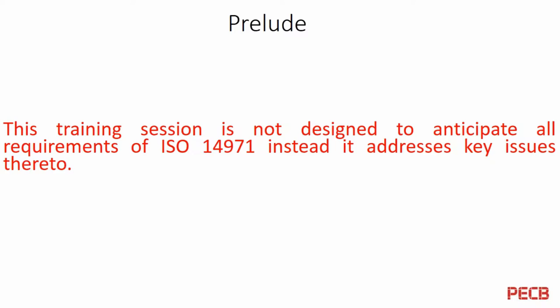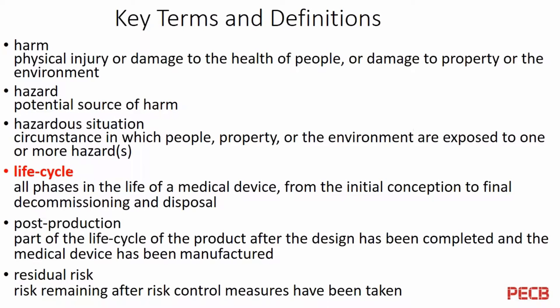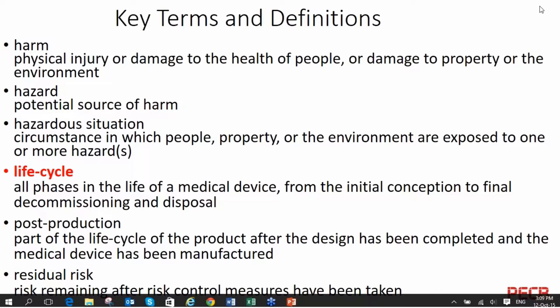Let's start. Before we go through the presentation, let's agree on some helpful terms as defined in the ISO 14971 standard. Harm is physical injury or damage to the health of people, or damage to property or the environment. Hazard is a potential source of harm. Hazard situation is circumstances in which people, property, or environment are exposed to one or more hazards. Life cycle — which I need to stress today — covers all phases in the life of the medical device, from initial conception to the final decommissioning and disposal of the product.